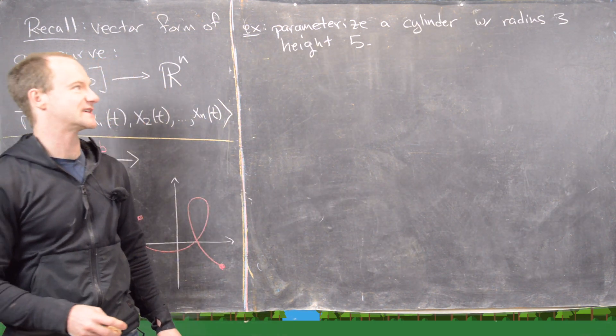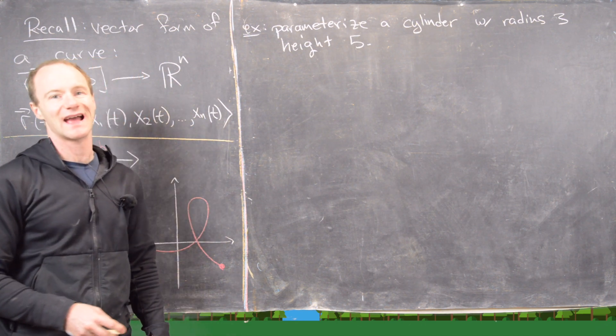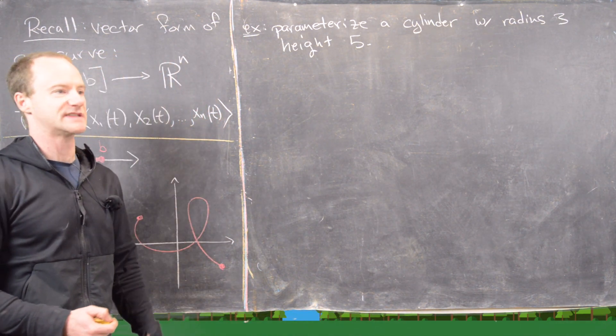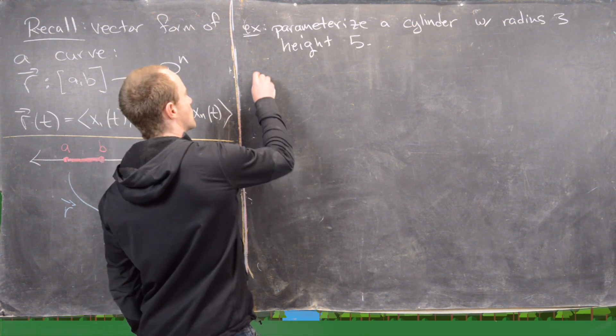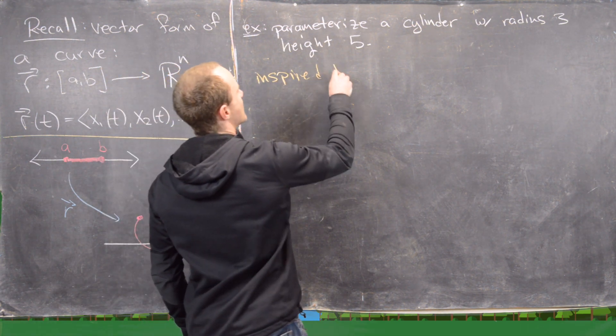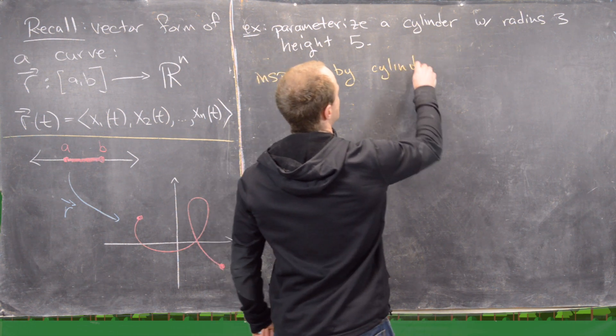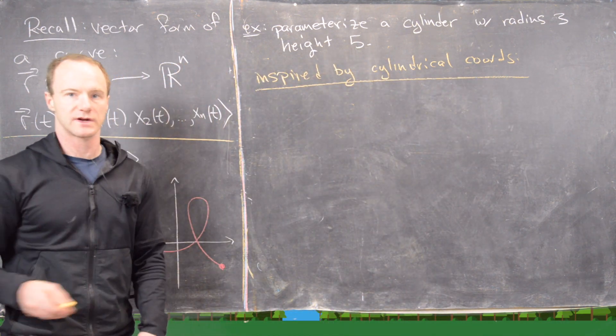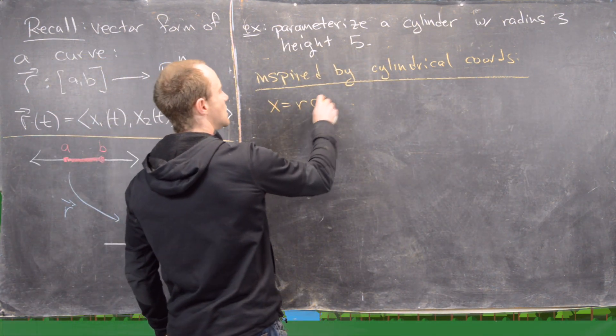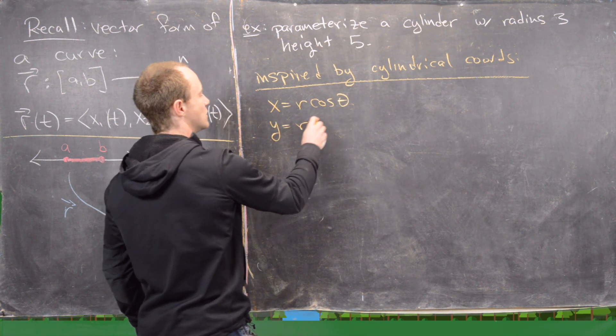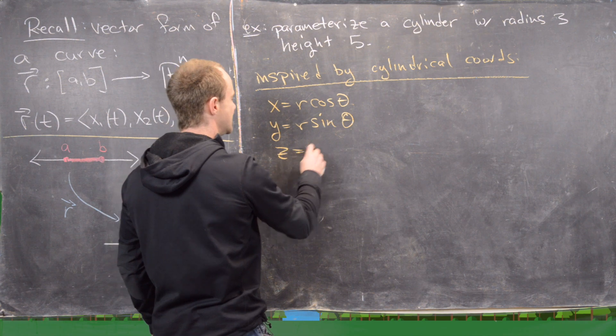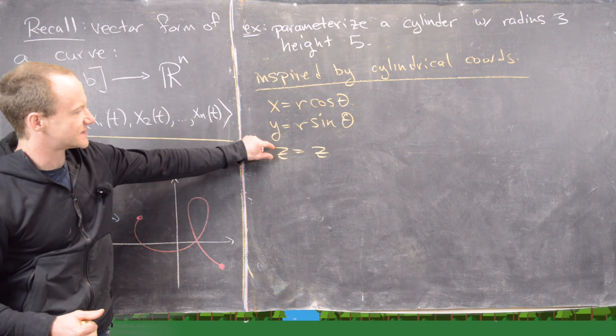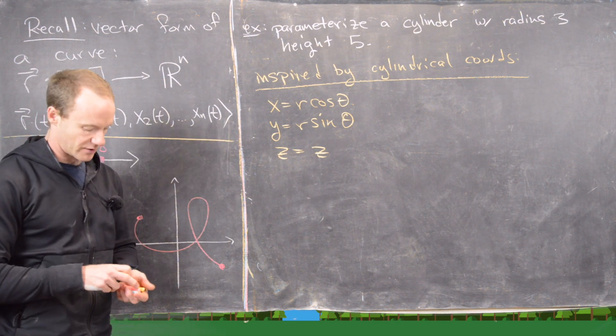So for our next example, we want to parametrize a cylinder with radius 3 and a height of 5. So here, just like before, we took inspiration from spherical coordinates. Now we're going to take inspiration from cylindrical coordinates. So let's just go ahead and recall what cylindrical coordinates are. So we have x equals r cosine theta, y equals r sine theta, and then z equals z. So I often don't call these cylindrical coordinates because it's really just a polar coordinate system crossed with a Euclidean coordinate system. But that's kind of neither here nor there.